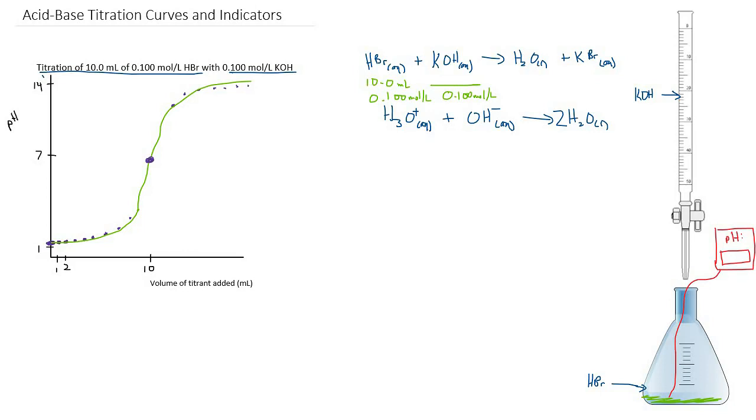Let's look at what kind of information we can get off a graph like this. First of all, we can find the equivalence point. The equivalence point is this region of the graph that has the steepest slope, or sometimes it's called an inflection point, where the graph switches from moving up to moving down. For this example, our equivalence point has a pH of 7. We can also see how much titrant was added when we were at the equivalence point. We reach the equivalence point by adding 10 milliliters of titrant.